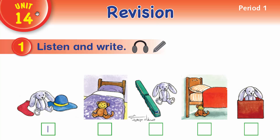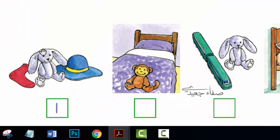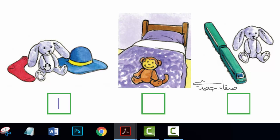Unit 14, Period 1, Activity 1. Listen and write. 1. The rabbit is between the sock and the hat.